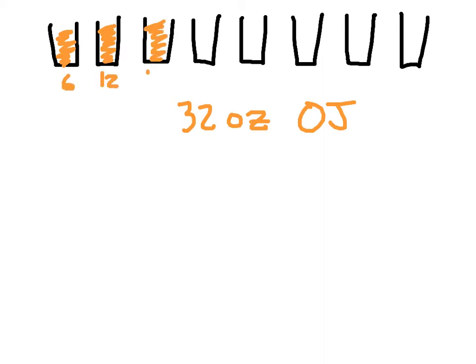And another 6 ounces here — that's 18. Another 6, and we have 6 ounces more to get us 24. More 6 ounces here, that's going to get us 30. We only have 2 ounces left. So, if the question is how many 6-ounce glasses could you fill with 32 ounces of orange juice, your answer would be 1, 2, 3, 4, 5 — 5 glasses.